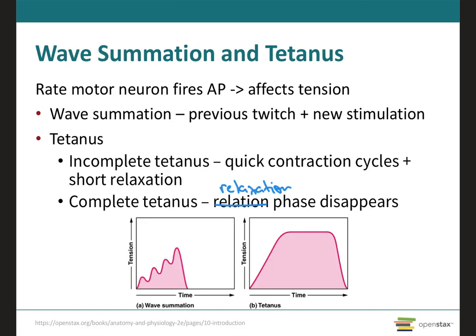The rate at which a motor neuron fires action potentials affects the tension produced in skeletal muscle. If fibers are stimulated while a previous twitch is still occurring, the second twitch will be stronger because there is already a response occurring — it adds to the previous one. This is called wave summation, because the excitation-contraction coupling effects of successive motor neuron signals are summed or added together, with the additional calcium released during the second stimulus adding to the first, resulting in greater contraction of the motor unit.